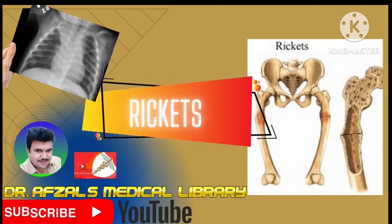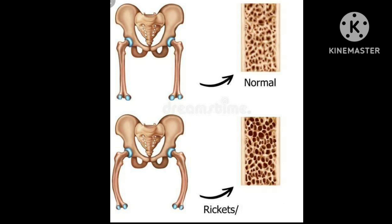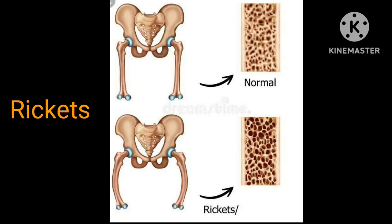Hi, here I am Dr. Zell and the topic is Ricketts. Ricketts is a disease of growing bone — specifically the unmineralized protein matrix at the growth plates. It occurs in children before fusion of the epiphysis.